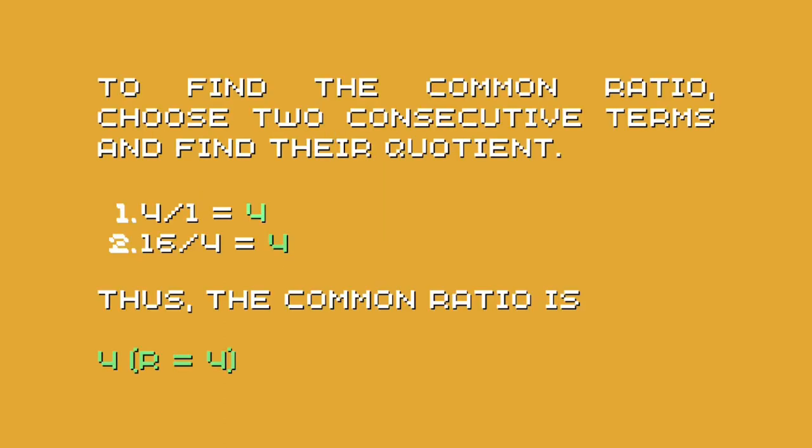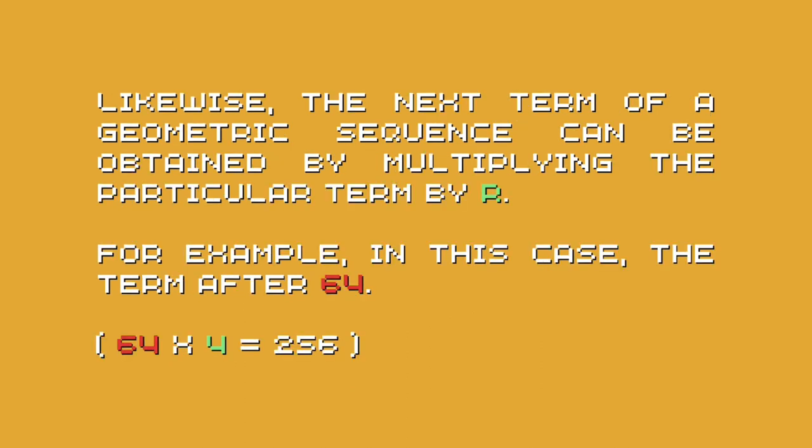Now let's solve the problem together! To find the common ratio, choose two consecutive terms and find their quotient. For example, 4 divided by 1 is equal to 4, and 16 divided by 4 is equal to 4 as well. Thus, the common ratio is 4. Likewise, the next term of a geometric sequence can be obtained by multiplying the particular term by r or number 4. For example, in this case, the term after 64 is 256.